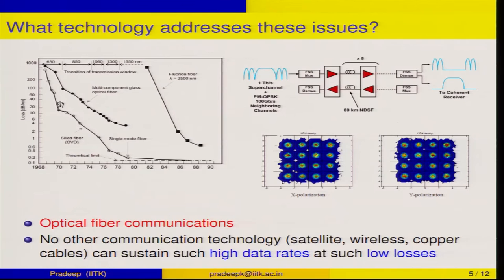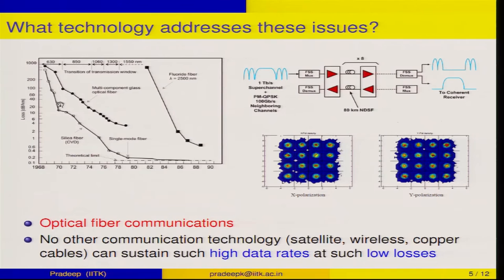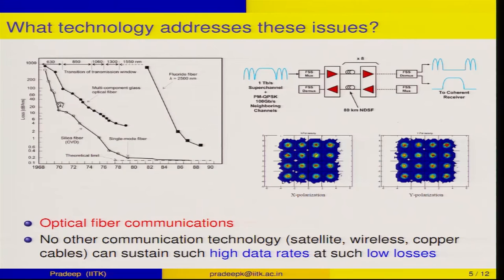If you now ask what technology can accomplish all these goals — long distance communication with low loss, large data rate communication due to high bandwidth — the only technology that addresses these issues is optical communications. The current status shows that people have demonstrated one terabit per channel communication over optical fibers, something no other communication technology can achieve in terms of such high data rates and low losses.